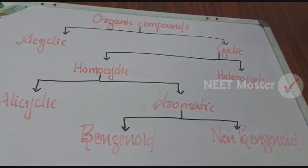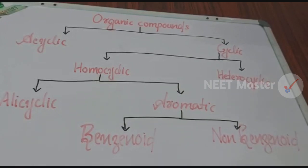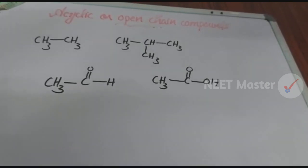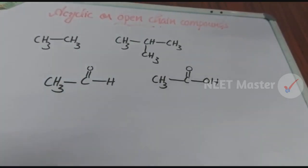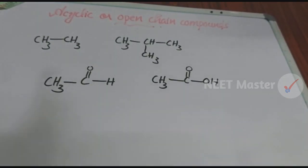Homocyclic compounds are further divided into alicyclic and aromatic. Aromatic compounds are then divided into benzenoid and non-benzenoid. Acyclic compounds include straight-chain molecules as well as branched-chain molecules.